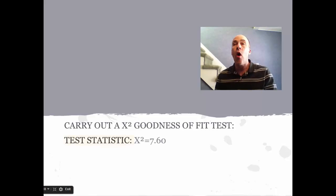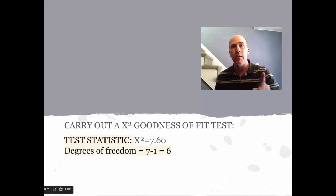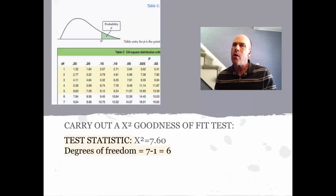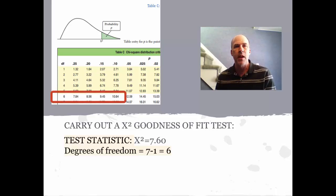Now we're going to carry out the test. We already know the test statistic: chi-squared equals 7.60, which we computed earlier. The degrees of freedom is six—seven categories minus one. Now I want to find the p-value. Using a table from the back of your textbook, I look at the row for six degrees of freedom right here, and I try to find that test statistic of 7.60. I don't expect to find 7.60 exactly; I just need to know where it lies within the row.